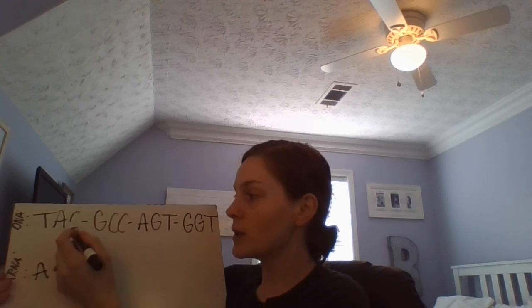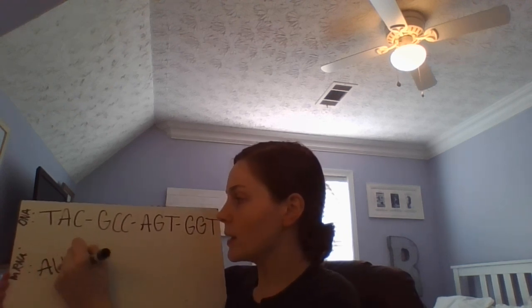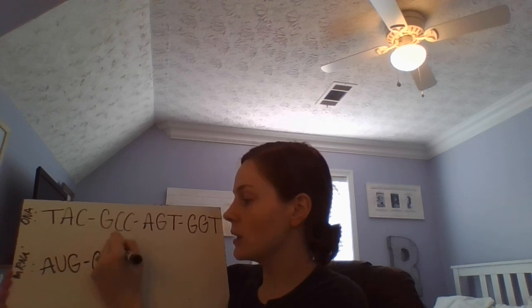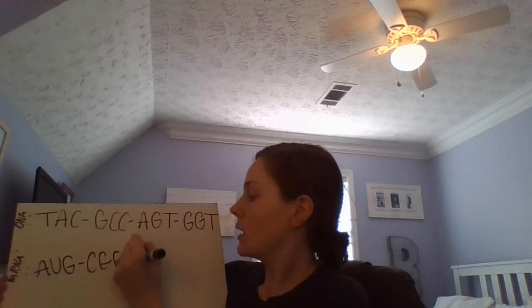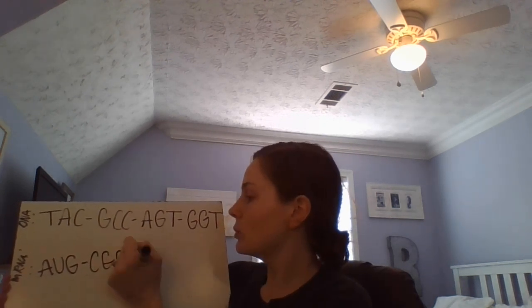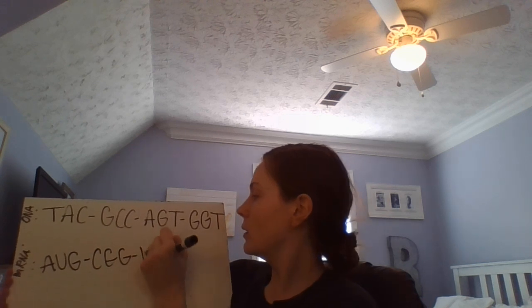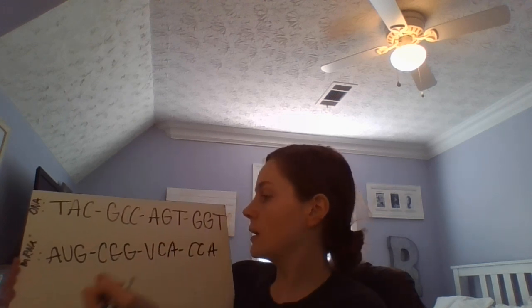In order to make your mRNA, you've just got to figure out what pairs. Remember, A pairs with T, except if it's RNA, it's going to be U for uracil, and then G pairs with C. So T pairs with A, A pairs with T, but this is mRNA so this is a U. C pairs with G, G pairs with C, and you keep doing this — U, C, A, C, C, A.